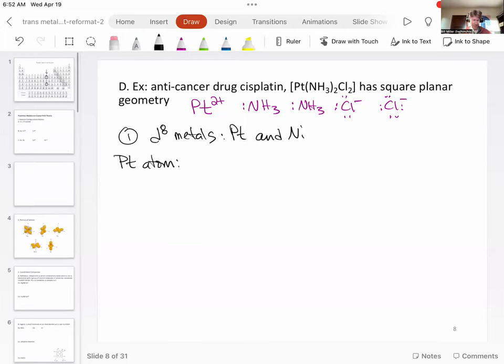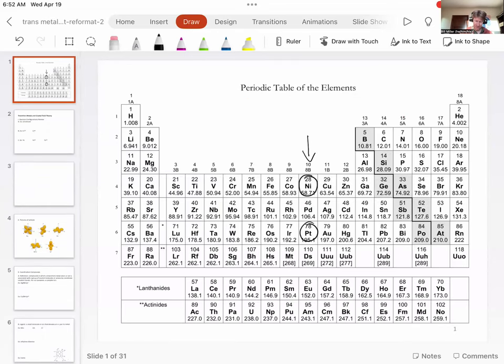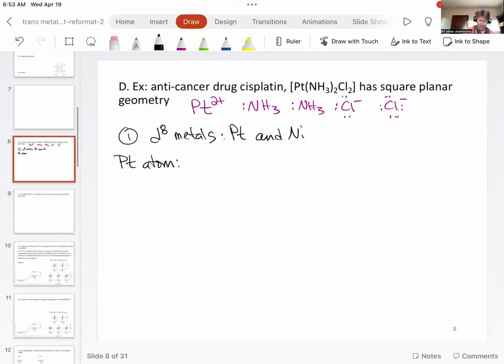We can always refer back to our periodic table. Here's platinum, it's going to have a noble gas core of xenon, then it's going to go to 6s, then it's going to hit the first asterisk and go down here to the 4f, then it's going to come back up and hit the 5d. So it's going to have xenon, and it's going to have 6s2, then it's going to have 4f14.